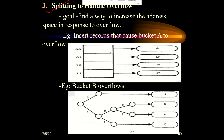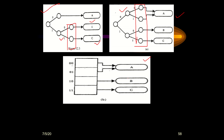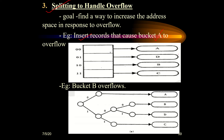The third step is splitting to handle overflow. If a record is inserted into bucket A and bucket A overflows, since two addresses are already pointing to A, one address stays with A and the other is assigned to a new overflow bucket called D. So when A overflows, the next address is assigned to the new bucket D.